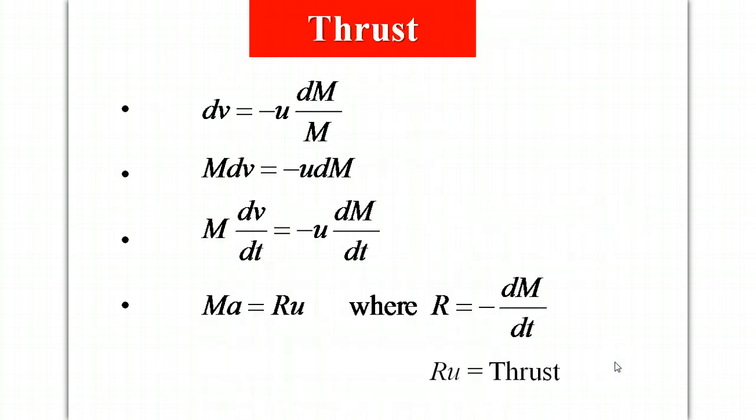Moving ahead again starting with this equation, if we basically divide both sides by dt we have a dv dt in the left side and a dM dt. dv dt is just the acceleration and dM dt is the rate at which mass is being expelled.